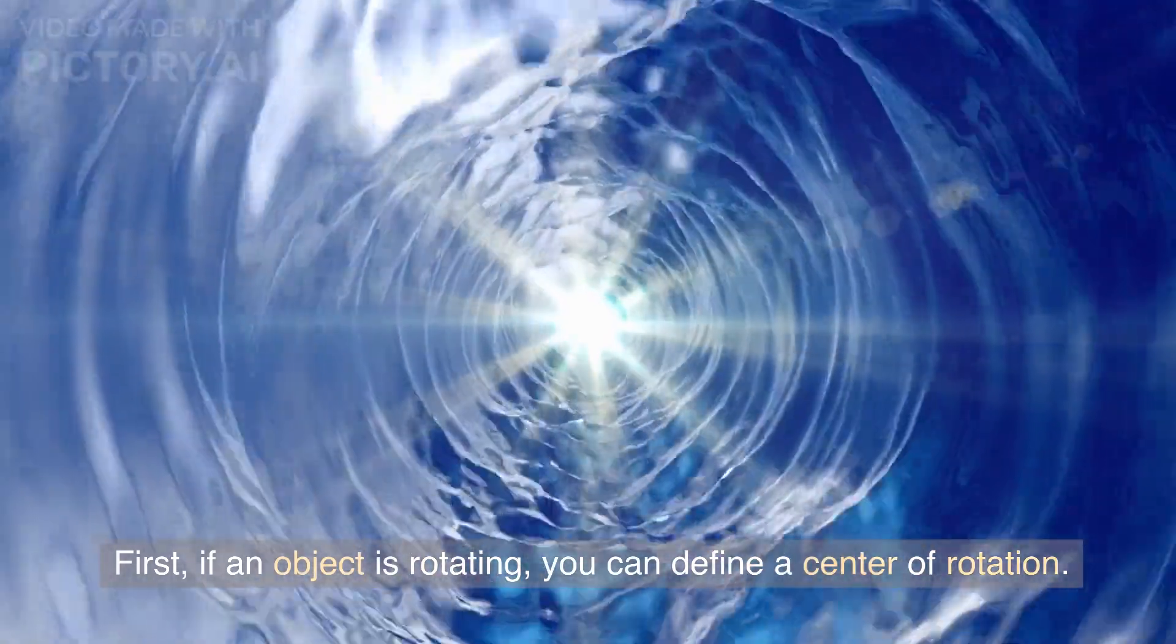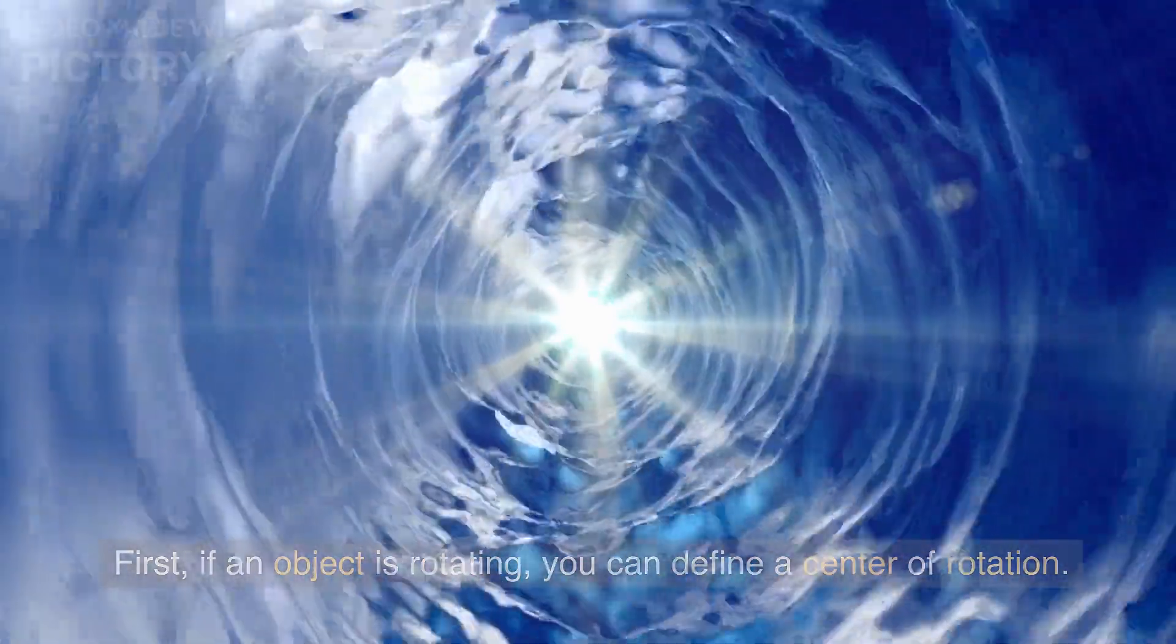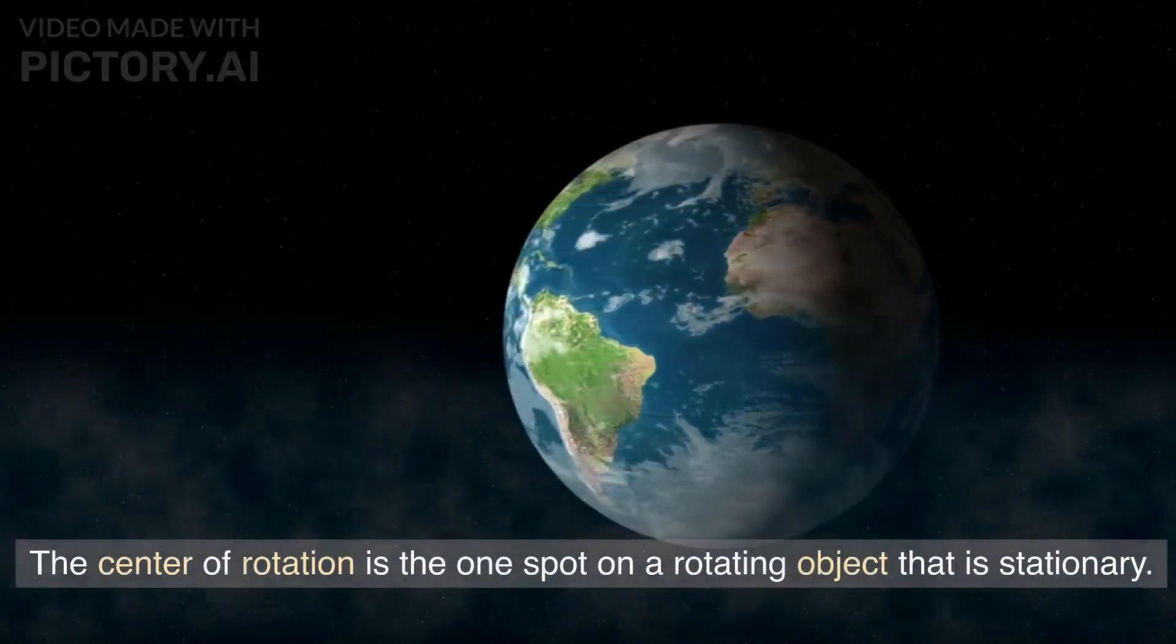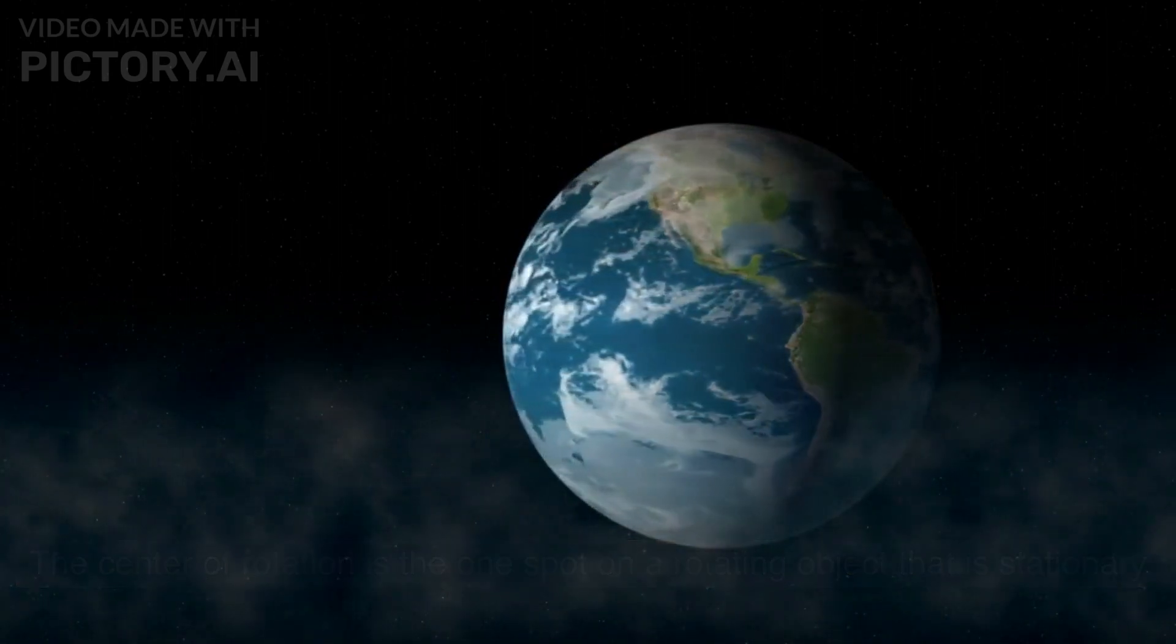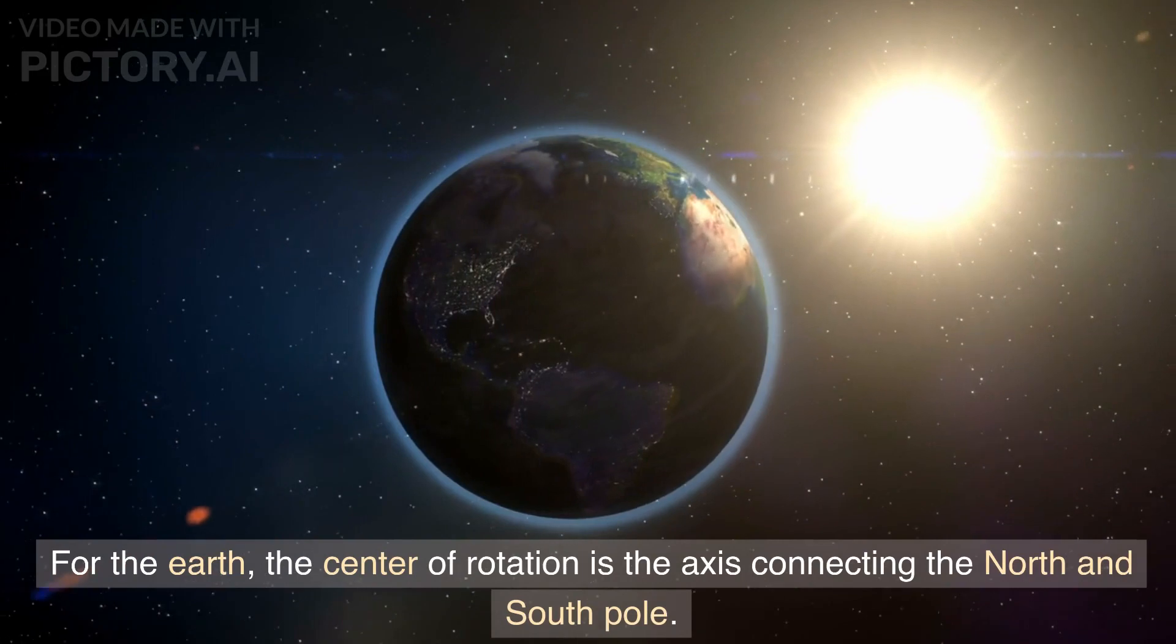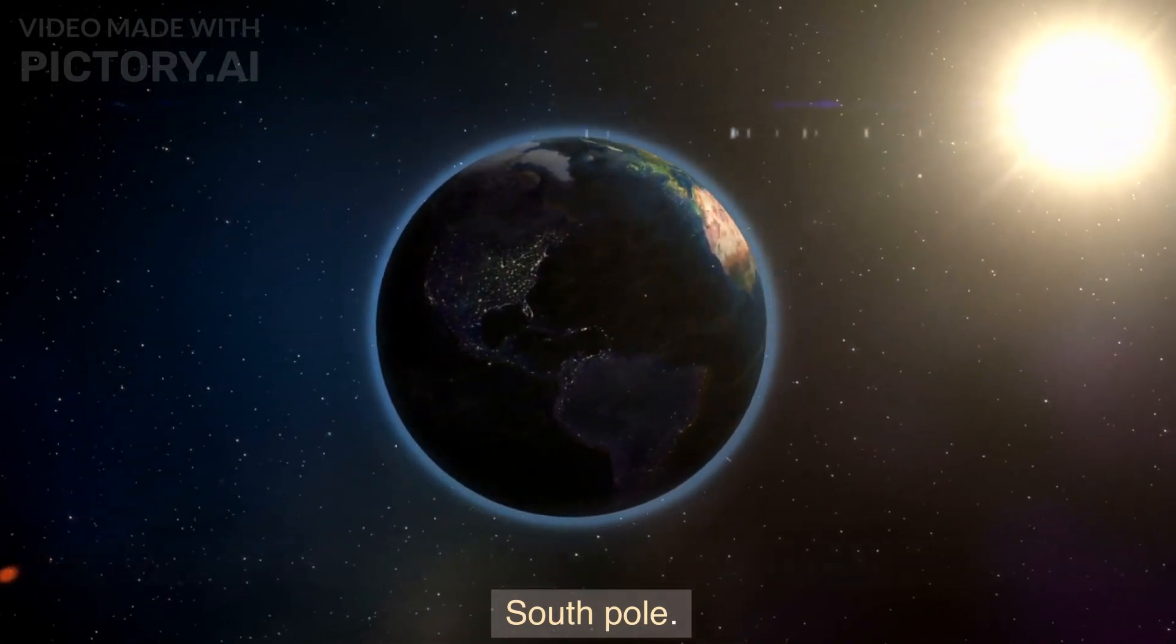First, if an object is rotating, you can define a center of rotation. The center of rotation is the one spot on a rotating object that is stationary. For the earth, the center of rotation is the axis connecting the north and south pole.